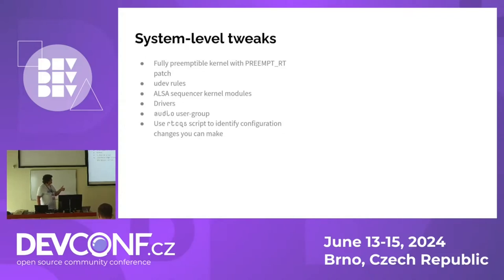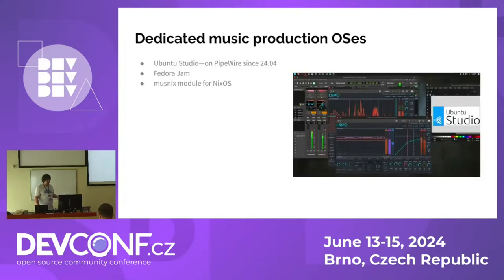There's a script called RTCQS that will give you a list of everything that is or isn't configured in an optimal way for music production. But instead of working with all that, you can also install a dedicated music production OS where things are configured out of the box. A popular example is Ubuntu Studio — they've just switched over to PipeWire, considering it mature enough in April to incorporate as a core component, now that it's past its 1.0 release.